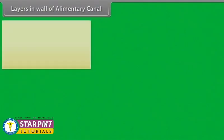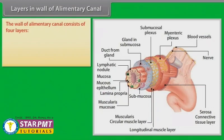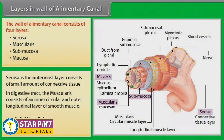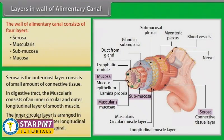The wall of the alimentary canal consists of four layers: serosa, muscularis, submucosa, and mucosa. The serosa is the outermost layer consisting of a small amount of connective tissue. In the digestive tract, the muscularis consists of an inner circular and outer longitudinal layer of smooth muscle — the inner circular layer arranged in a tight spiral and the outer longitudinal layer in a loose spiral.